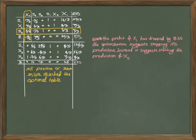You see since the profit of x1 has dropped by $30, the optimization suggests stopping its production. Instead it suggests starting the production of x2. Your new solution now is x1 equal to 0, x2 is 8 fifth and x3 is 56 fifth.